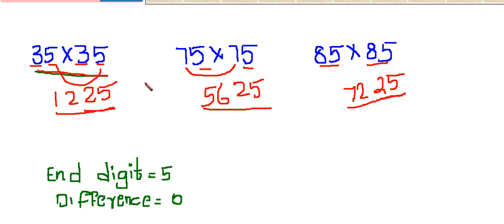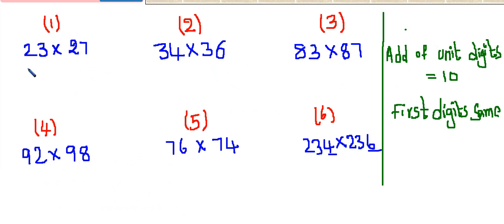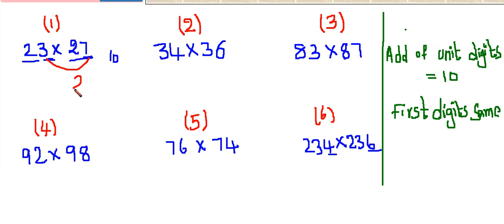These numbers are ended with 5 and their difference is 0, so we can use this trick. See one more model — here the addition of the two unit digits is 10 and the first digits are the same, so we can use this shortcut trick. Multiply 7 into 3, which is 21. And 2 into the next number of 2, that is 3. 2 times 3 is 6. So 621 is the answer.